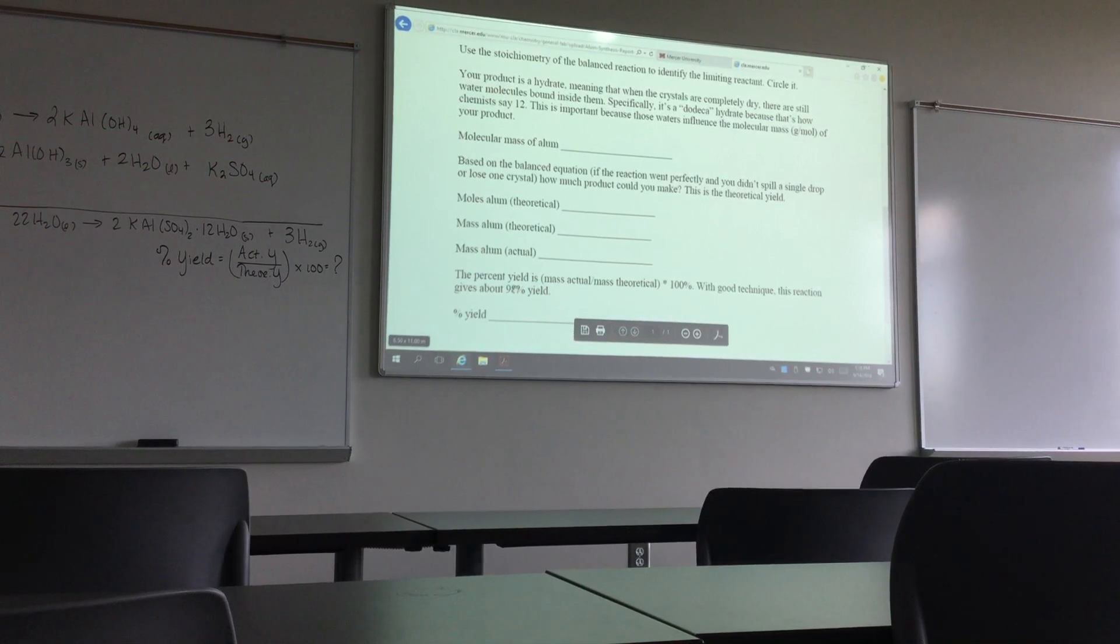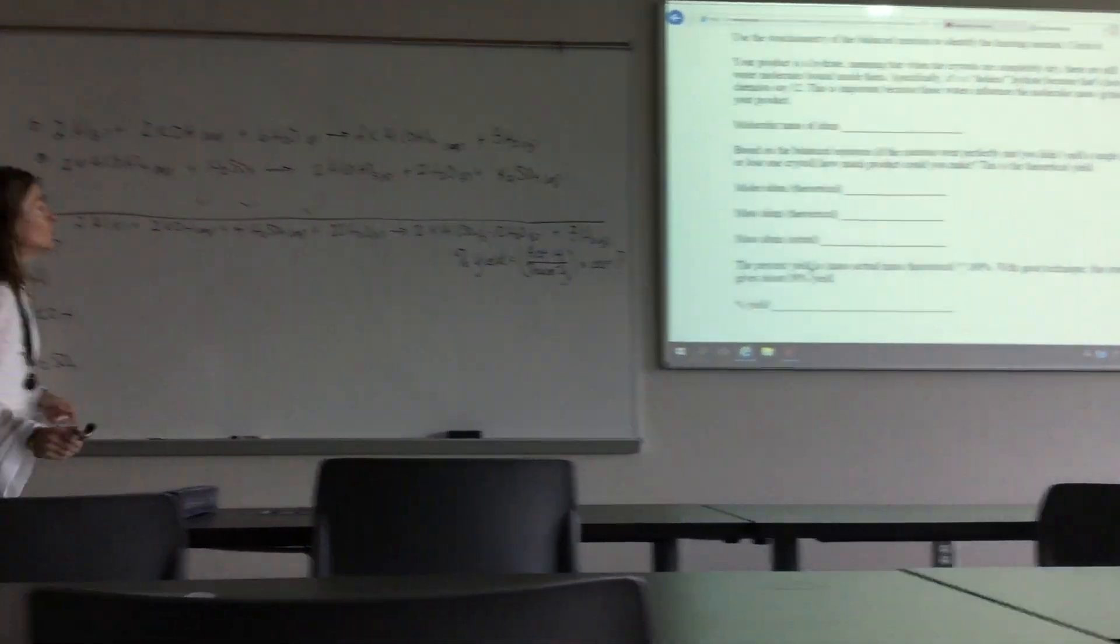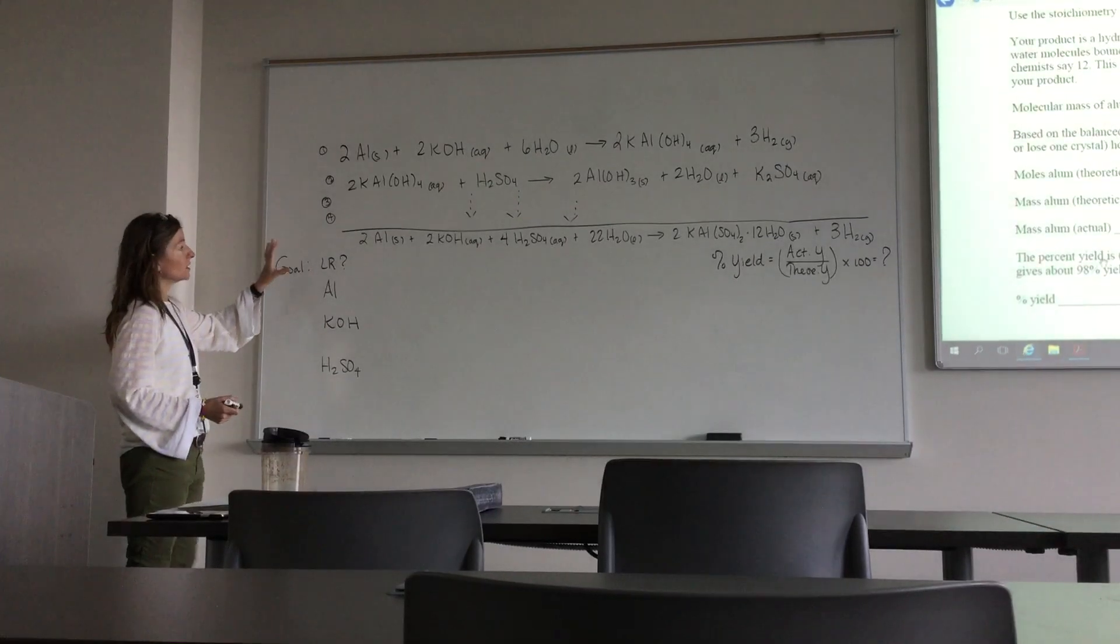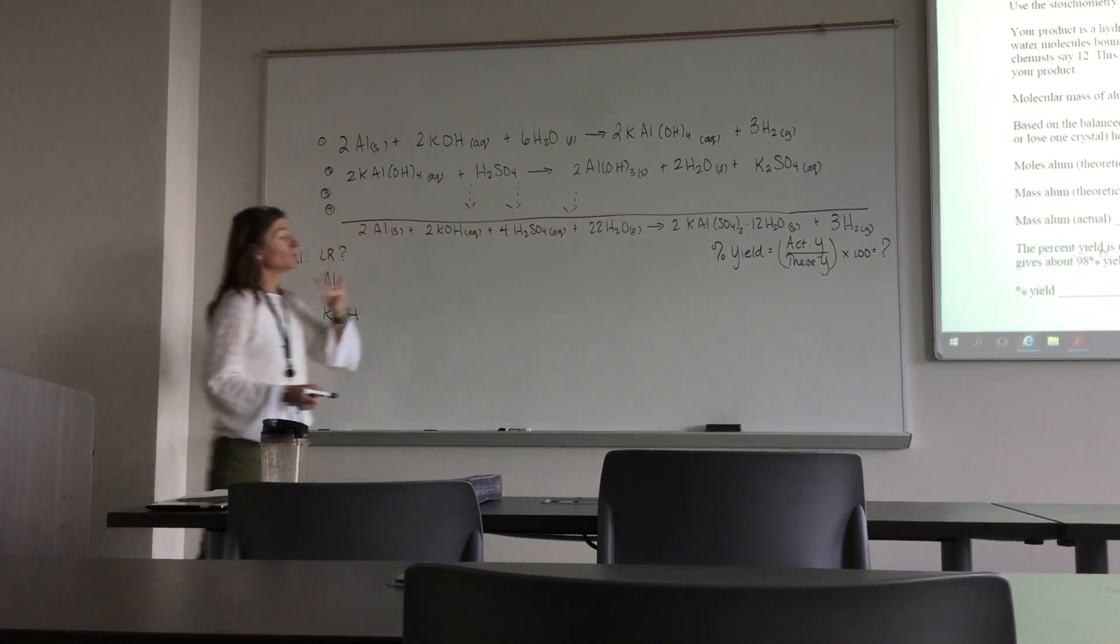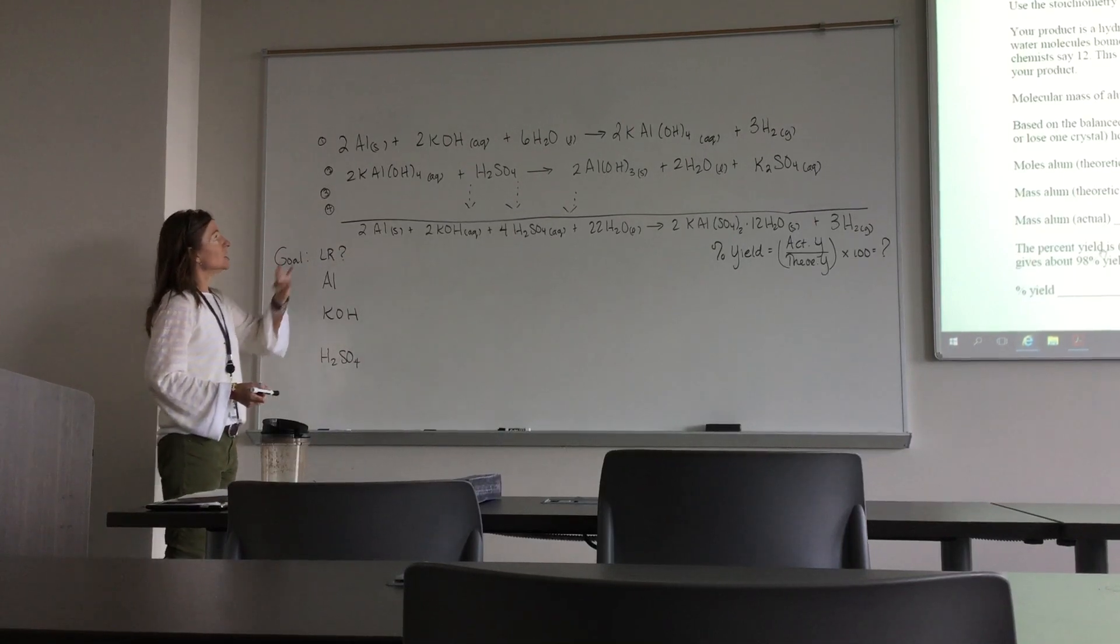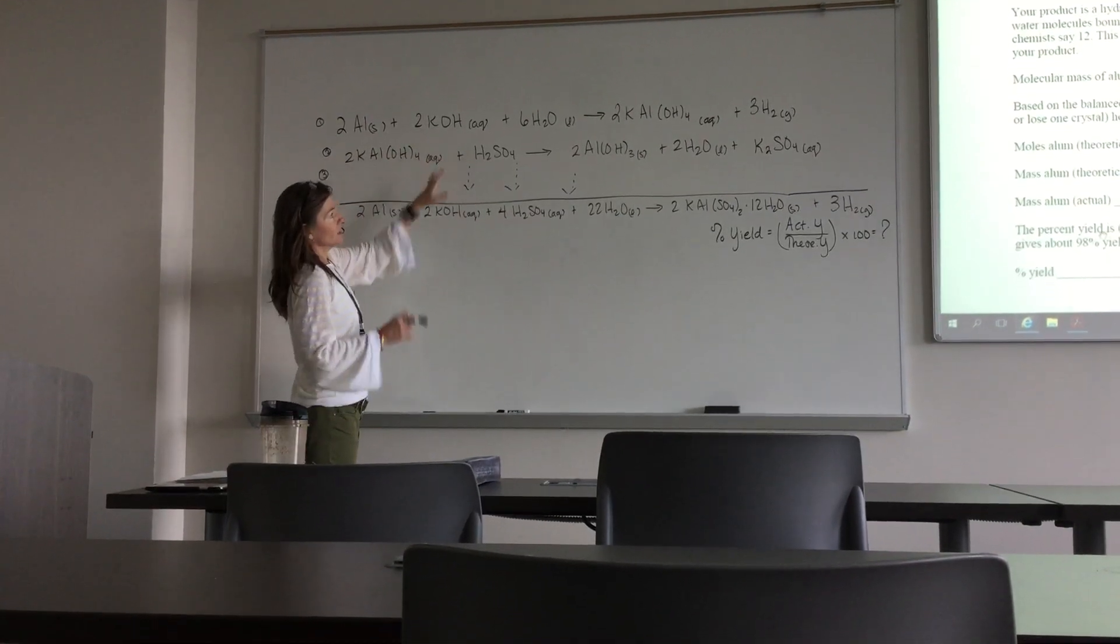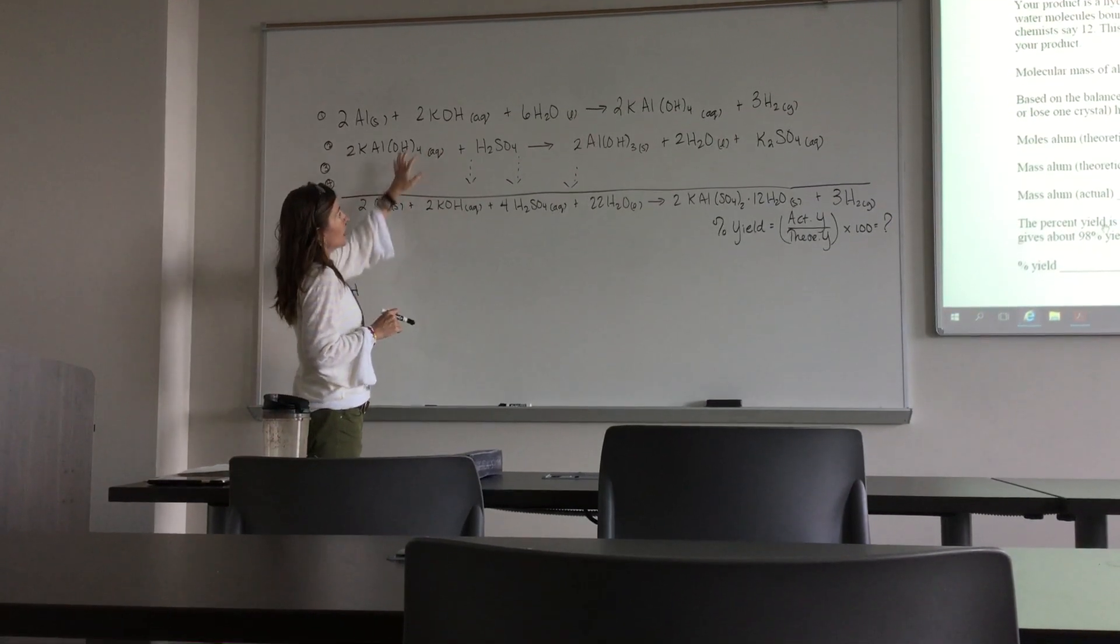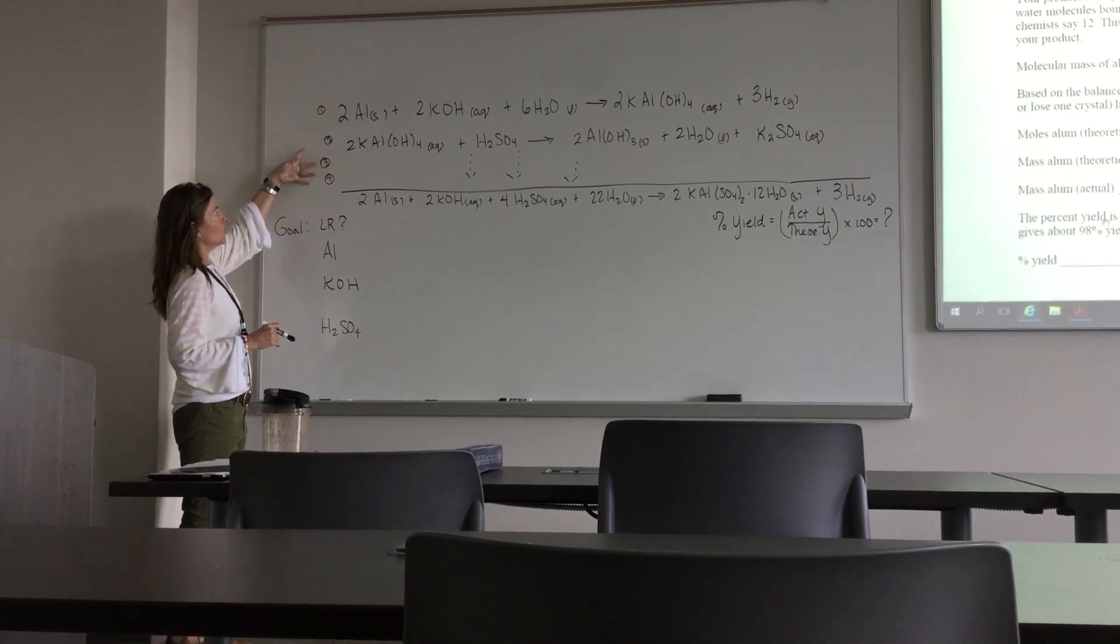So let's come to the board where we've got some written work. That first part wants you to come up with this overall reaction. Remember you ran the reaction in four steps. You started with aluminum and reacted with potassium hydroxide. It started getting bubbly and produced the black sooty stuff at the bottom.